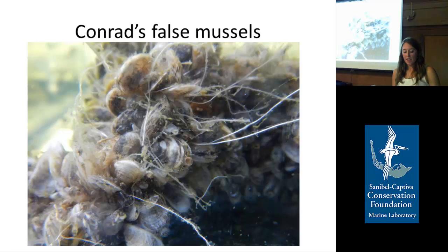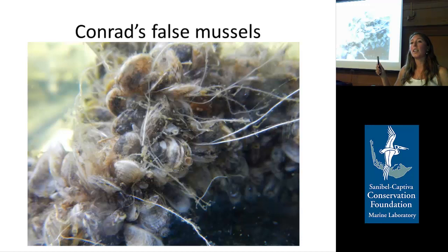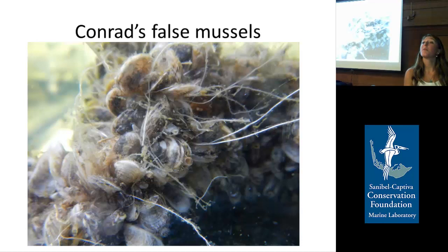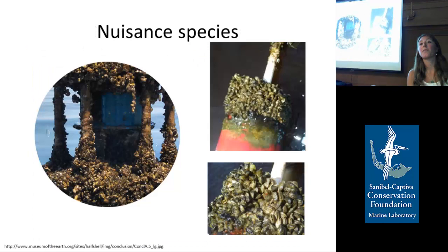Conrad's false mussels — scientific name Mytilopsis leucophaeata — are very poorly understood. They are native to the U.S. and occur from Mexico in the Gulf of Mexico all the way up the East Coast to New England, but they're very sparse and for a long time people didn't even note them in surveys. They attach to hard substrates using byssal threads and eat using a little siphon. While generally not densely populated, they sometimes form dense clumps and have become a nuisance biofouling species in Brazil and Europe, with population eruptions that aren't well understood.